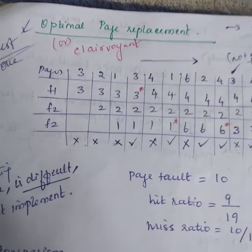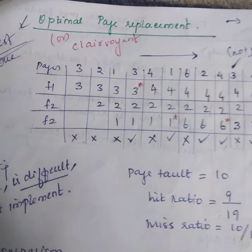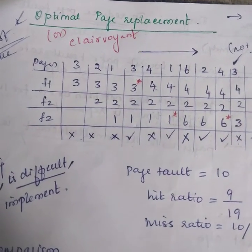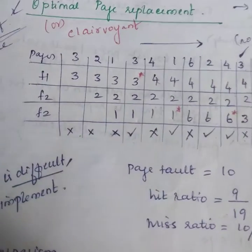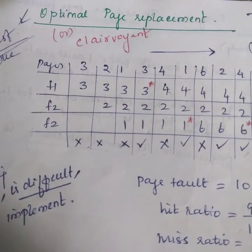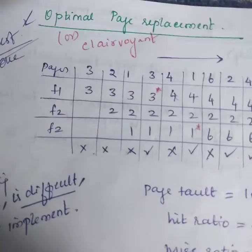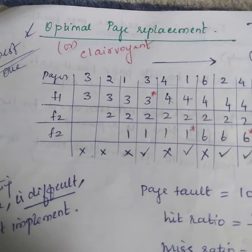Here in this optimal page replacement, the OS replaces the page that is not used for longest period of time in future. It is the best replacement algorithm. It is also called as Clairvoyant replacement algorithm as it gives the least number of page faults.